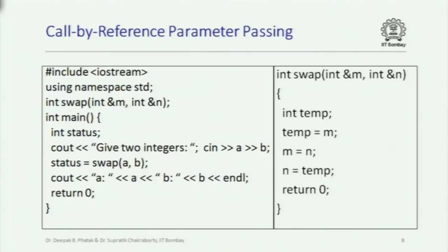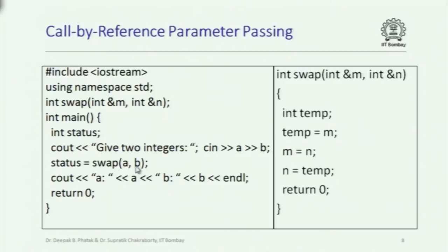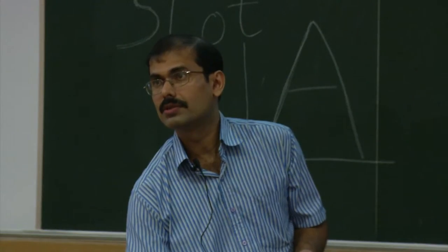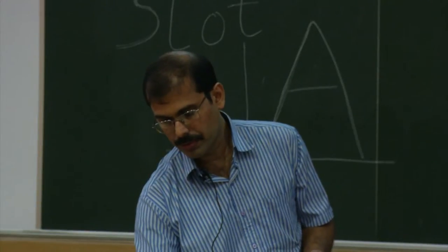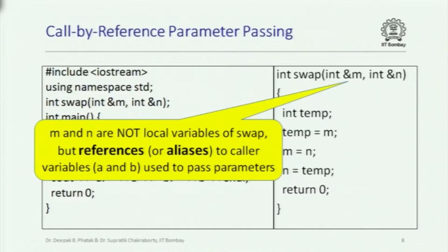Call by reference actually allows the calling and the called function to both refer to the same variables. You have the ampersand before the parameter in both of these cases. These are no longer local variables of the called function, but rather aliases or references to whatever the caller used when it called this function. Wherever you use m inside the function, you actually mean the variable that was used in place of m when you called the function. That is roughly the material we are going to have practice problems on today — function calls, flow of control and parameter passing.